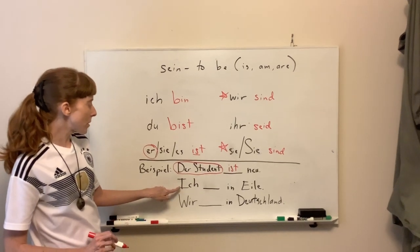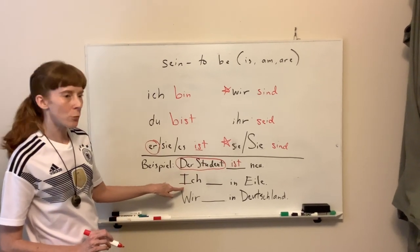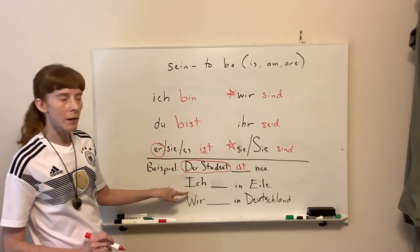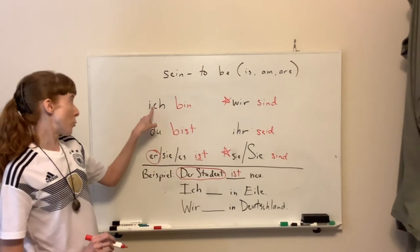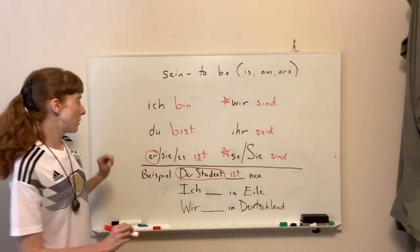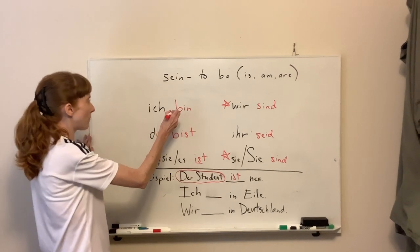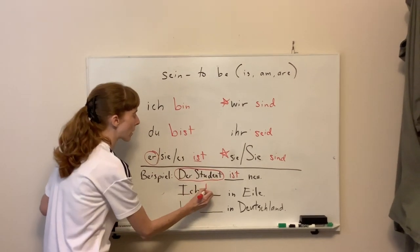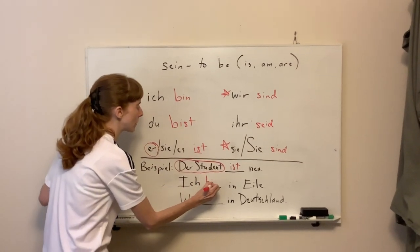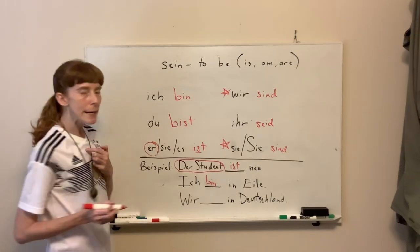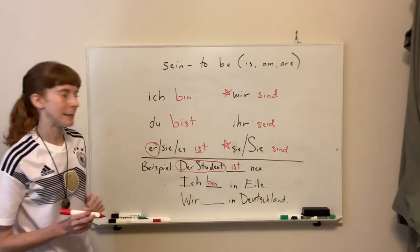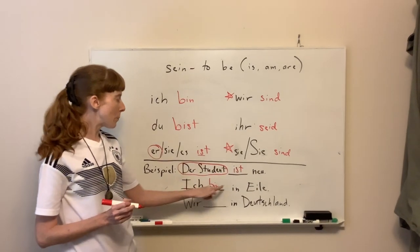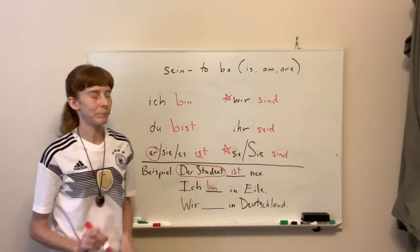The next one is a little bit easier — we just have ich. So we go up to ich, find bin, and put it in the blank. Ich bin in Eile — I am in a hurry.